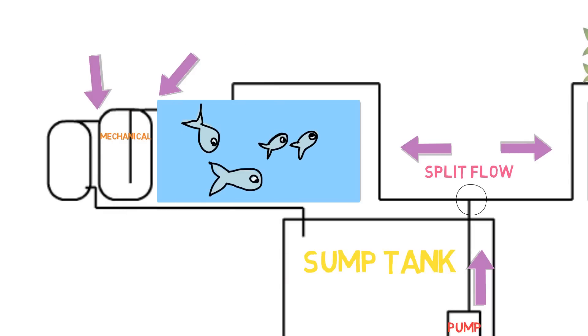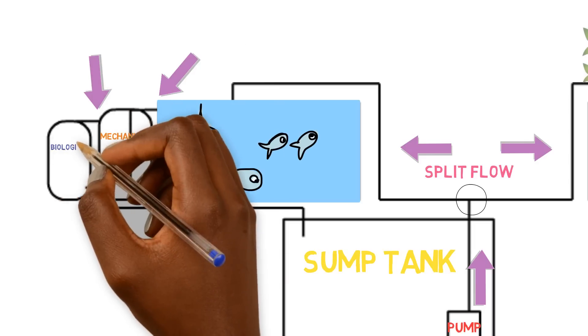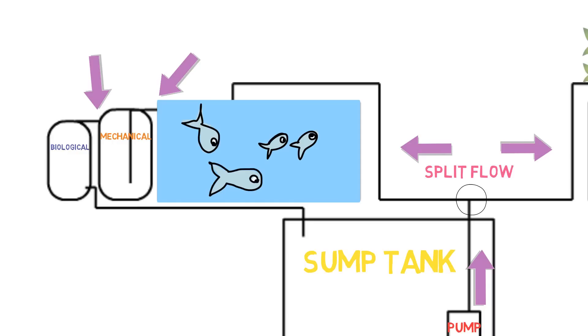From there, the outlet of the mechanical filter is going to come into the biological filter where all your nitrifying bacteria will colonize and develop. This is where your nitrification process is going to take place. The toxic ammonia is going to get converted to nitrite and then converted into nitrate.